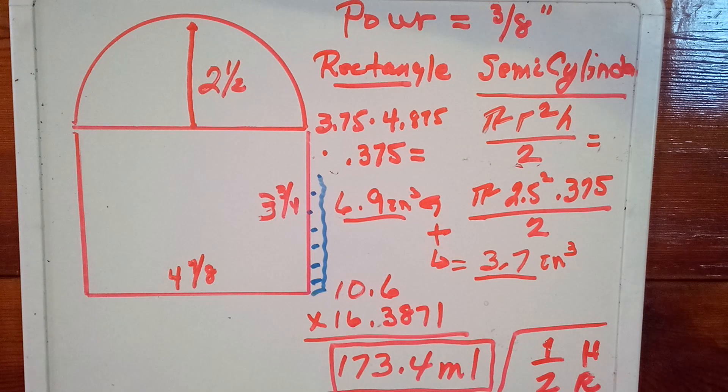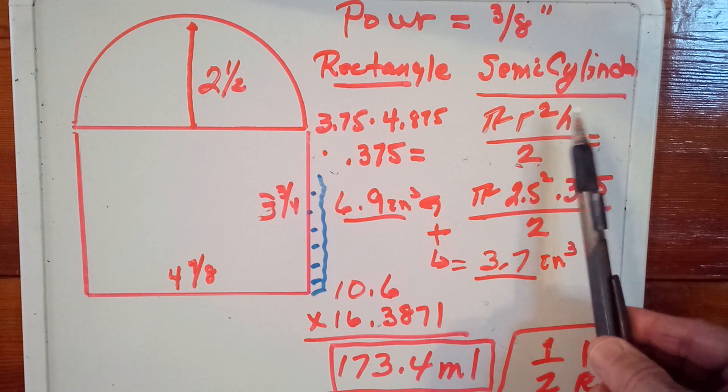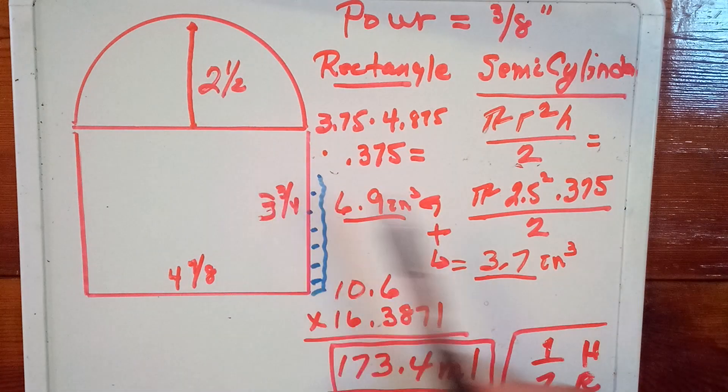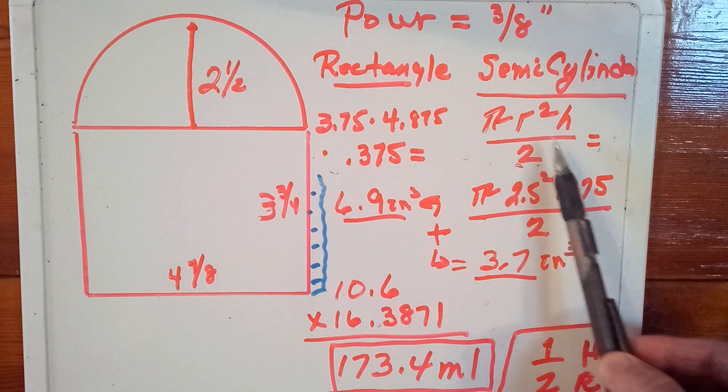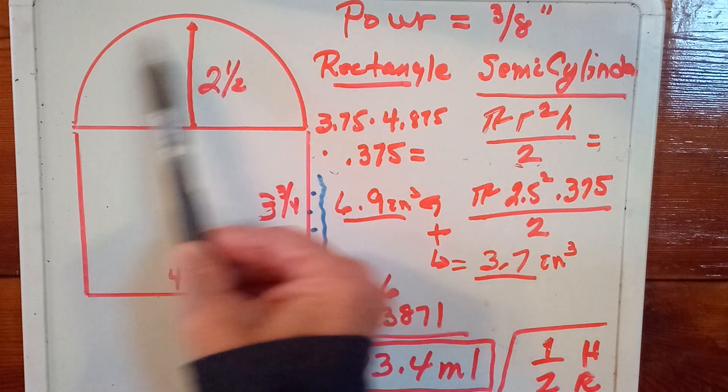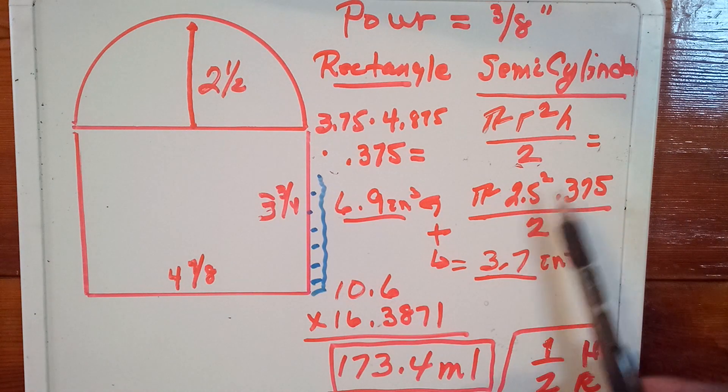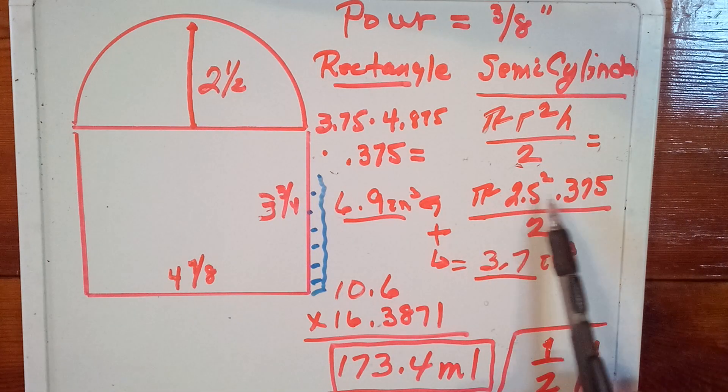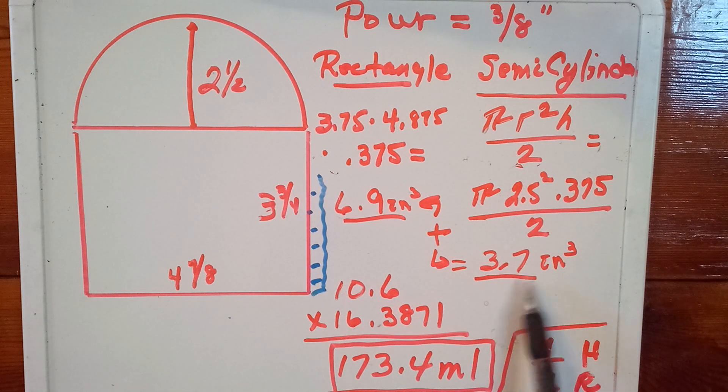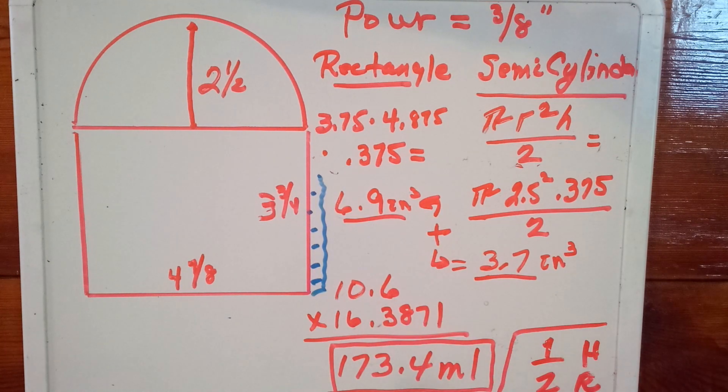For the semi-cylinder, the equation is, and by the way, this is length times width times height. For the semi-cylinder, the equation is pi times radius squared. Two and a half inches would be the radius. Pi times radius squared times height or depth, however you want to look at it, divided by two, because we don't have a full cylinder here. It's a semi-cylinder or half a cylinder. So the calculation becomes pi times 2.5 squared times 0.375, which we get from three-eighths, divided by two. And that equals 3.7 cubic inches. We add that to that. We come up with 10.6 cubic inches.